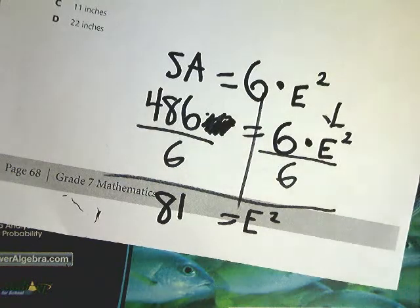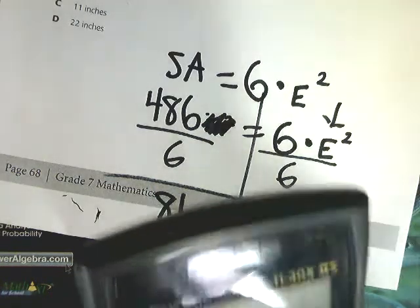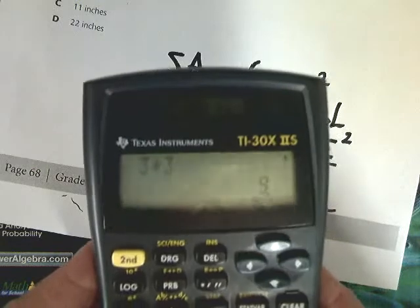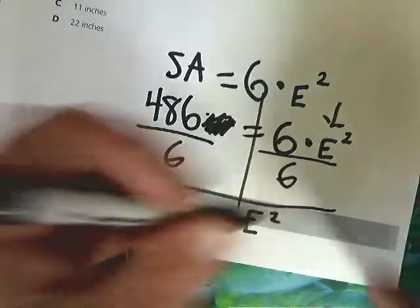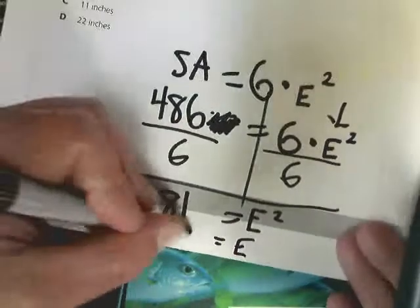So say I chose 3 as my potential e. I would do 3 times 3, and that does not work. But I do know that 9 times 9 equals 81. So my e value could be 9.